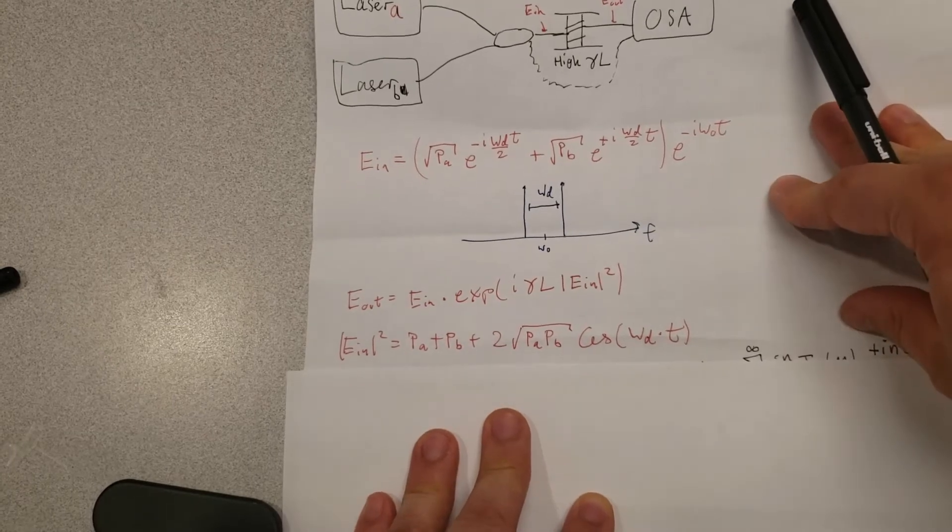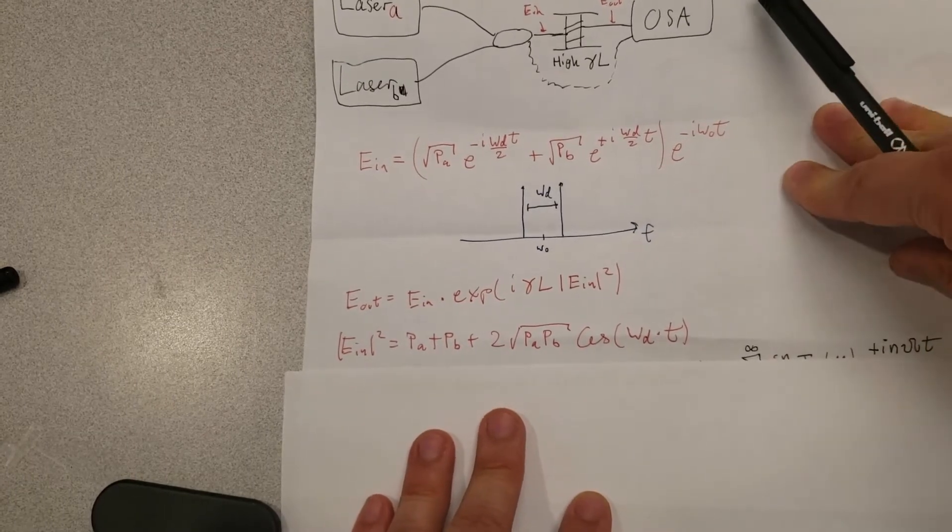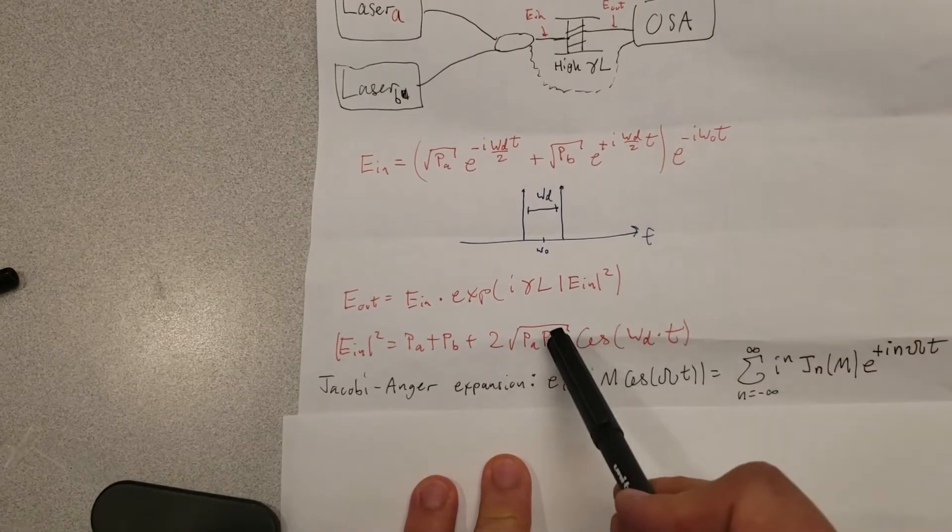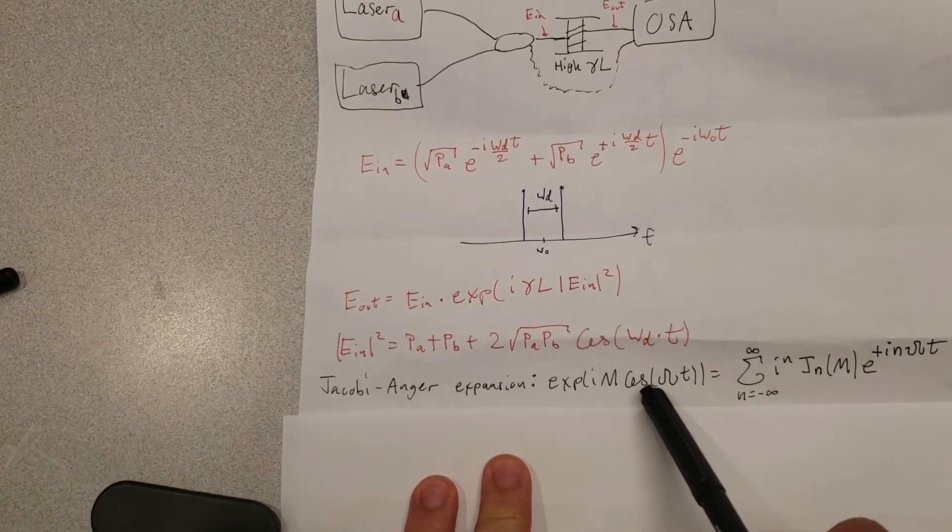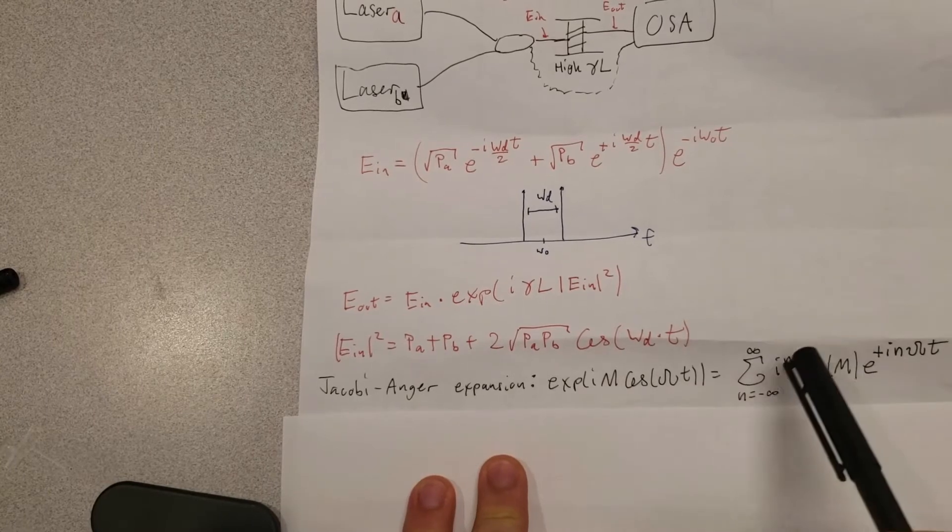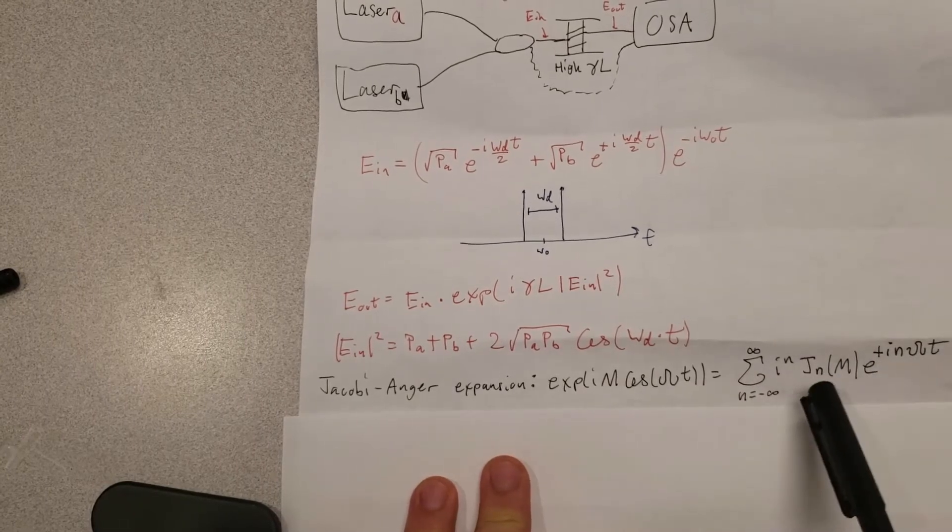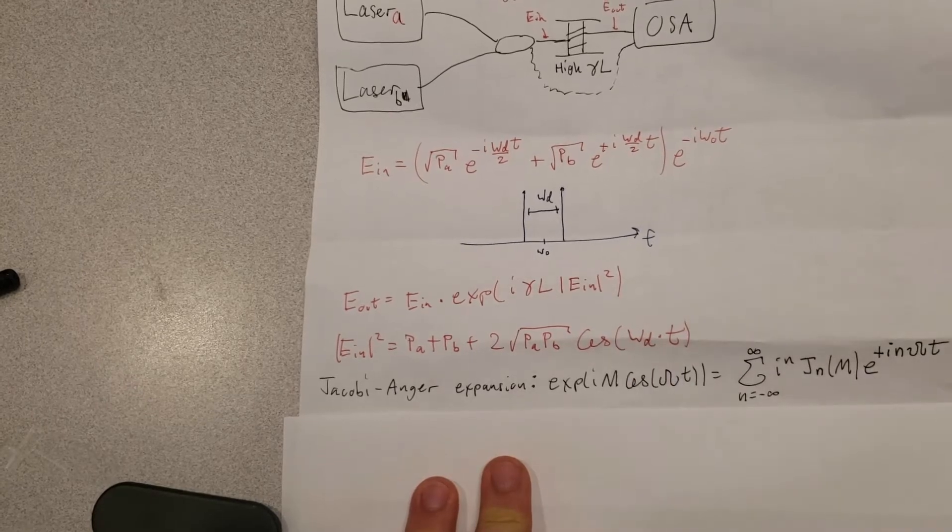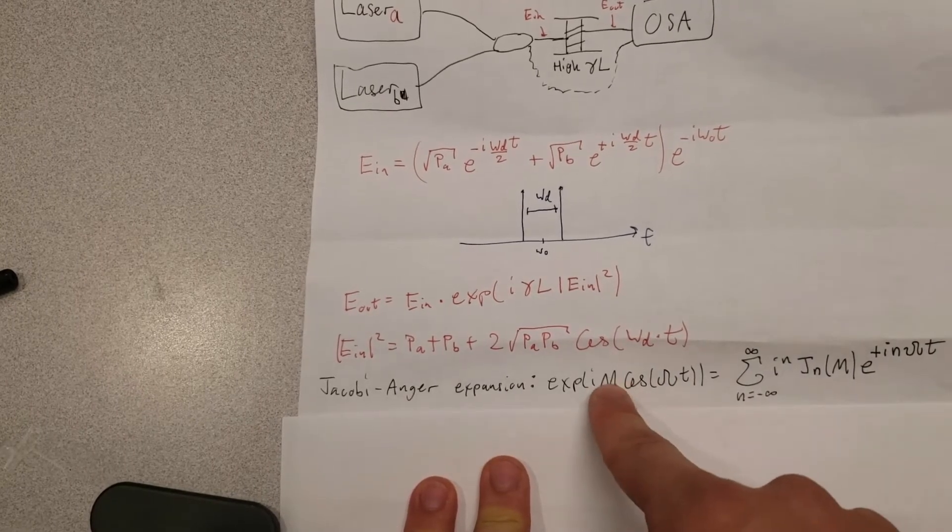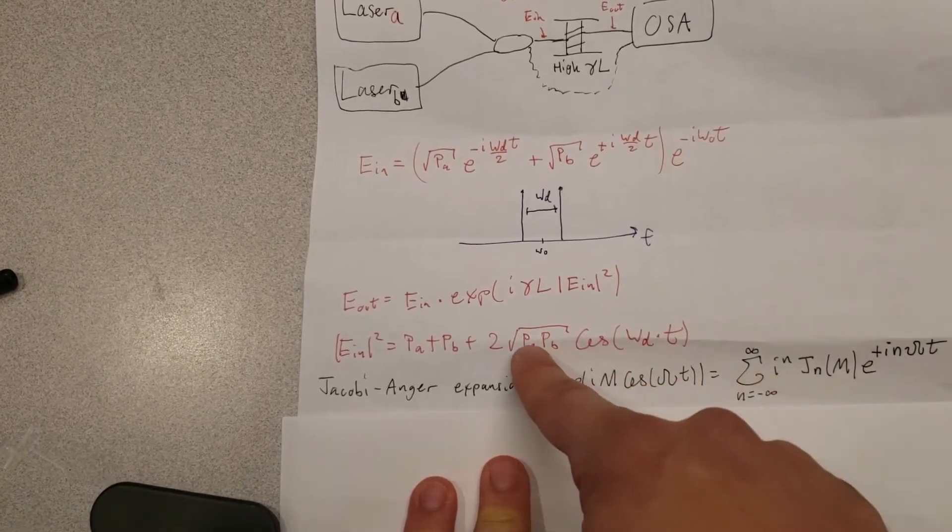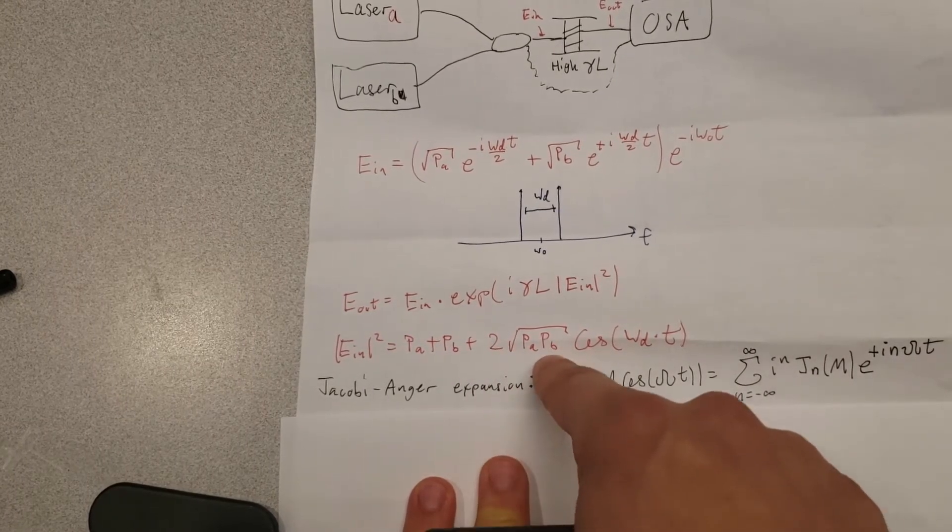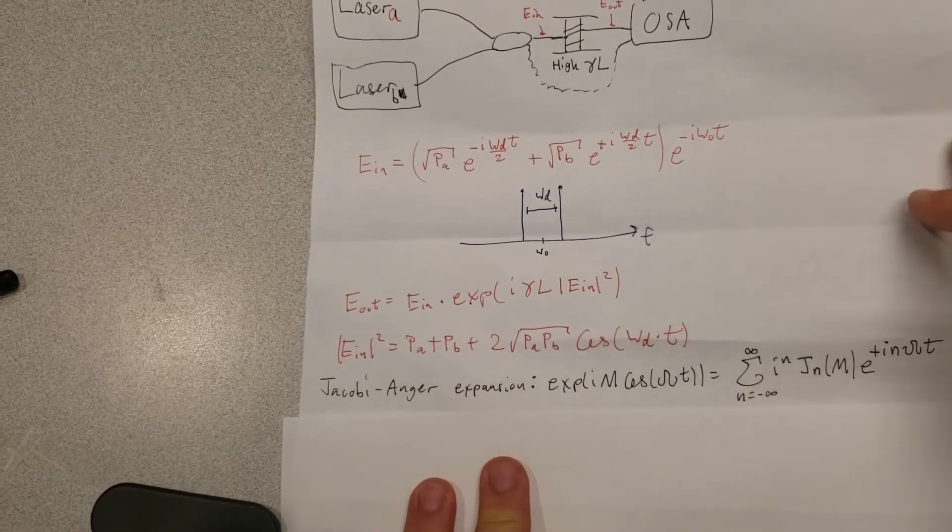If you remember the video I did on phase modulation, we can use something called the Jacobi-Anger expansion to express this kind of structure with a cosine inside of a complex exponential as an infinite sum of frequency sidebands spaced apart according to the omega d value, where the strength of each sideband depends on the magnitude of the modulation. In this case, m would be equal to 2 times the square root of pA times pB multiplied by gamma L.